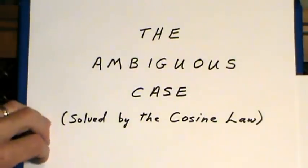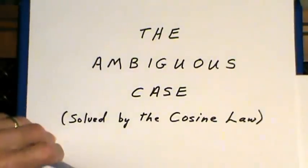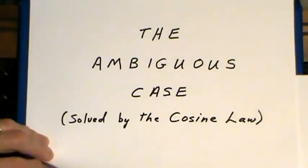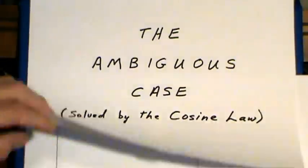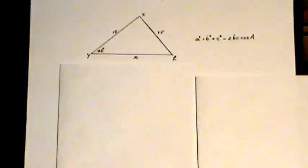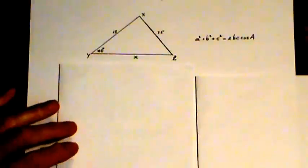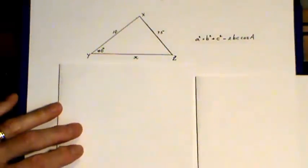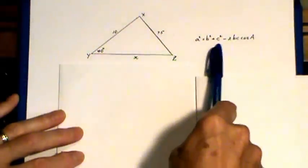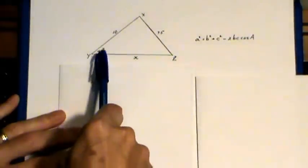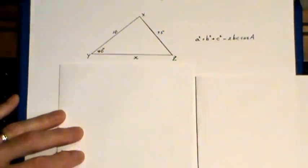In a previous video I looked at what's called the ambiguous case in trigonometry and solved it using the sine law. You can also solve it using the cosine law, and that's what I want to look at here. It's a rather unusual way of going at it, but it's possible to use this formula for the cosine law even though you know both the angle and the side across from the angle.